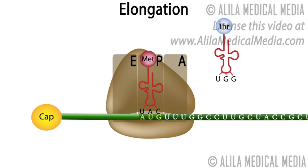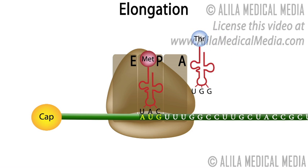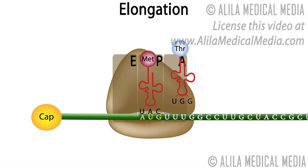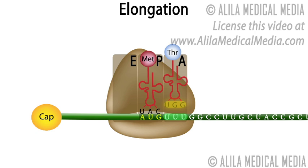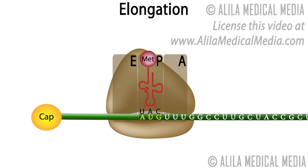Elongation: a new tRNA carrying an amino acid enters the A site of the ribosome. On the ribosome, the anticodon of the incoming tRNA is matched against the mRNA codon positioned in the A site. During this proofreading, tRNA with incorrect anticodons are rejected and replaced by new tRNA that are again checked.